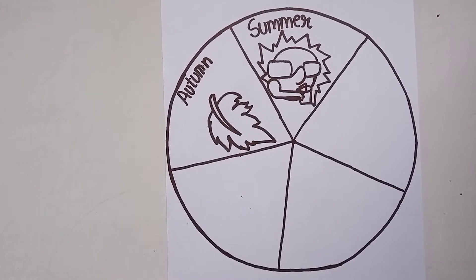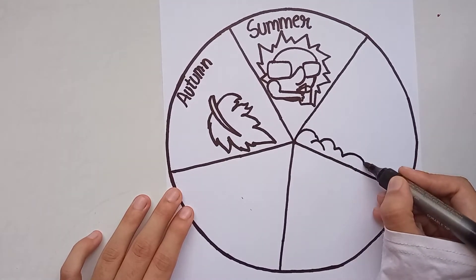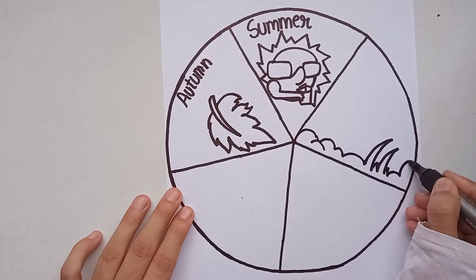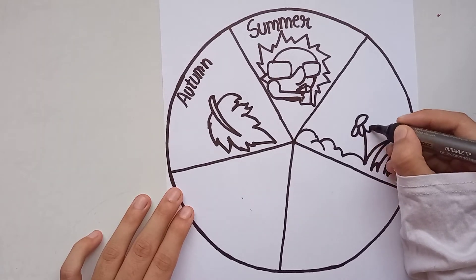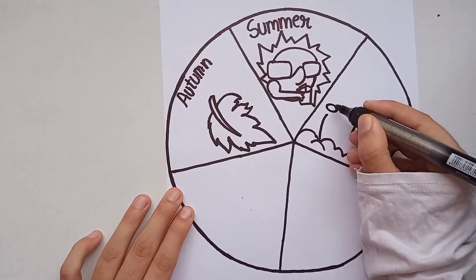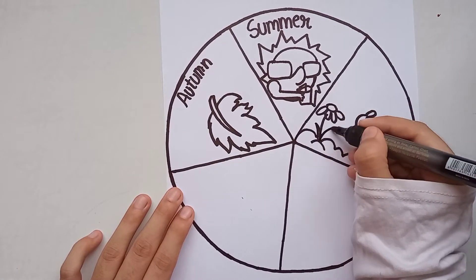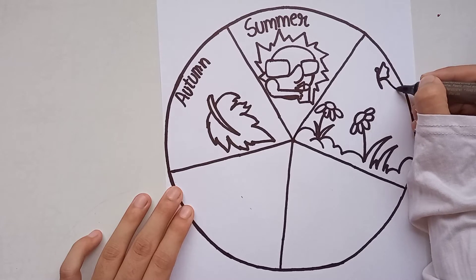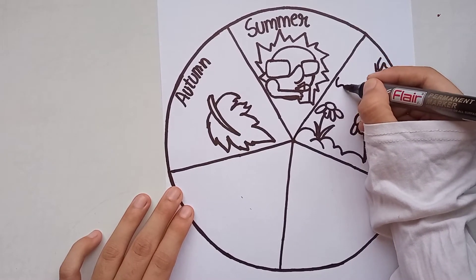Now I will draw spring season. What comes to your mind whenever you think about spring season? Flowers, butterfly, birds, isn't it? So I will draw flowers and a butterfly for spring season. These are green fresh leaves and grass, and now I will draw a flower. And there is another flower, and now I will draw a butterfly. I will write 'spring' — S-P-R-I-N-G.